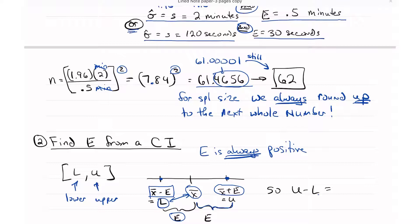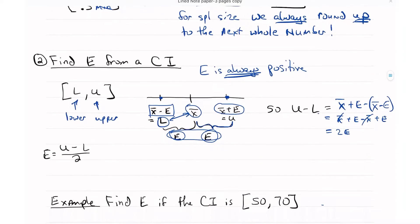Now also the distance between U and X bar is also E. So how far is it from L to U? Well, U minus L is going to be X bar plus E minus X bar minus E. This equals X bar plus E minus X bar plus E, so the X bars cancel out, giving me 2E, which is exactly what I see here, E plus E.